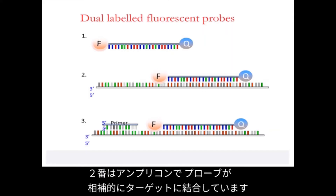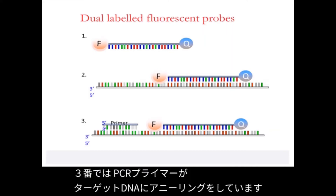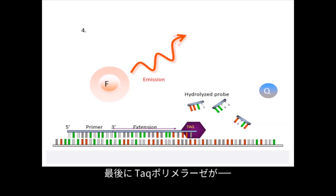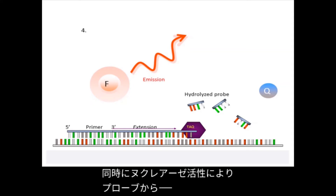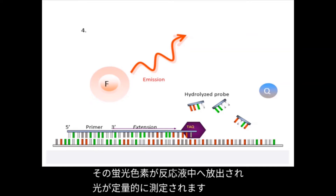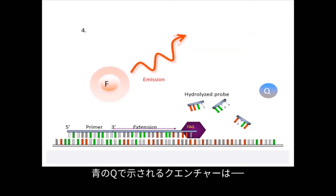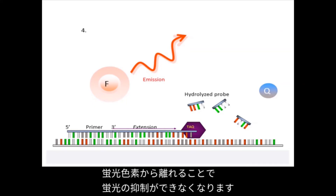In line two you can see the probe binding to its complementary target in your amplicon of interest, and in line three the PCR primers themselves also begin to anneal to the target. Finally, as the Taq polymerase extends your amplicon from the three prime end of the forward primer, it simultaneously cleaves the five prime fluorescent group from the probe due to its inherent nuclease activity. That fluorescent group is then released into the reaction mixture where light can be measured in a quantitative fashion. The quenching molecule is no longer placed close enough to the fluorescent group to effectively quench the reaction.